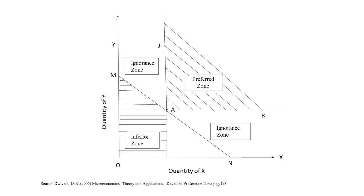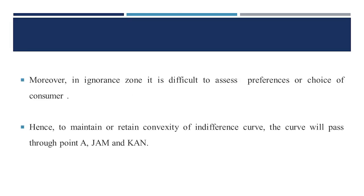The areas JAM and KAN are termed as the ignorance zone because any point in this area represents more of one good and less of the other good in comparison to point A. In this ignorance zone, it is difficult to assess the preferences or choices of the consumer.